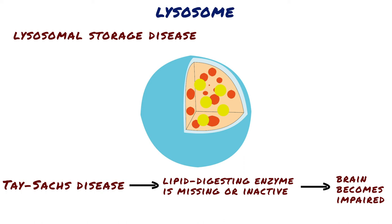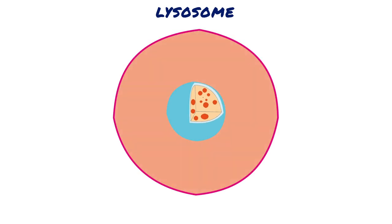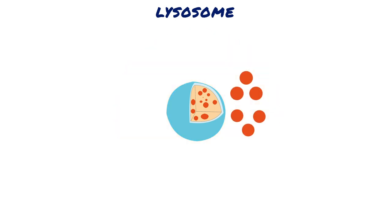Ordinarily, the membrane surrounding the lysosome prevents the enclosed hydrolytic enzymes from coming into contact with other substances in the cell, and therefore prevents their digestive actions. If a lysosome breaks open or leaks its contents, the released enzymes are not very active because the cytosol has a neutral pH. However, excessive leakage from a large number of lysosomes can destroy a cell by self-digestion.